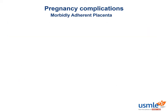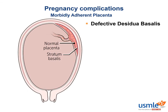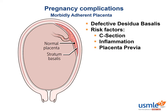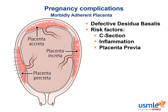Morbidly adherent placenta occurs when there is a defective decidua basalis — the maternal portion of the placenta. As a result, the placenta invades the myometrial wall of the uterus, digging deeper than it is normally supposed to. When it comes time to deliver the baby and the placenta, it is basically stuck, and removing it can lead to massive bleeding and hemorrhage. Common risk factors include C-sections, inflammation, and placenta previa — anything that can complicate the integrity of the decidua basalis. There are three types: placenta accreta, placenta increta, and placenta percreta.